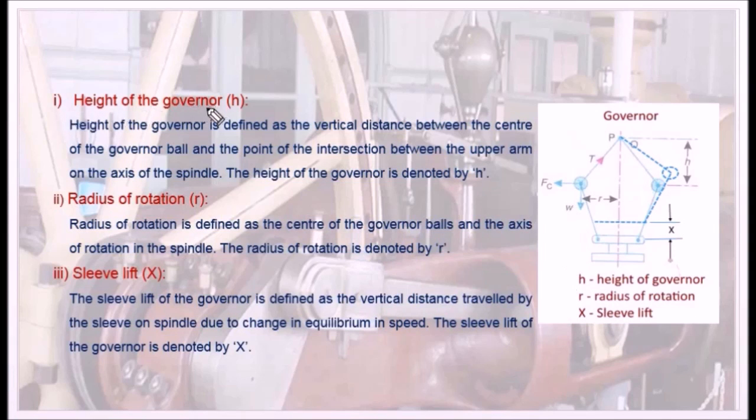First one is height of the governor. Height of the governor is defined as the vertical distance between the center of the governor ball and the point of the intersection between the upper arm and the axis of the spindle. The height of the governor is denoted by h. This point P is the pivot point. The distance between this pivot point and the center of the ball is called height of the governor. The value of h varies according to the speed of the spindle.